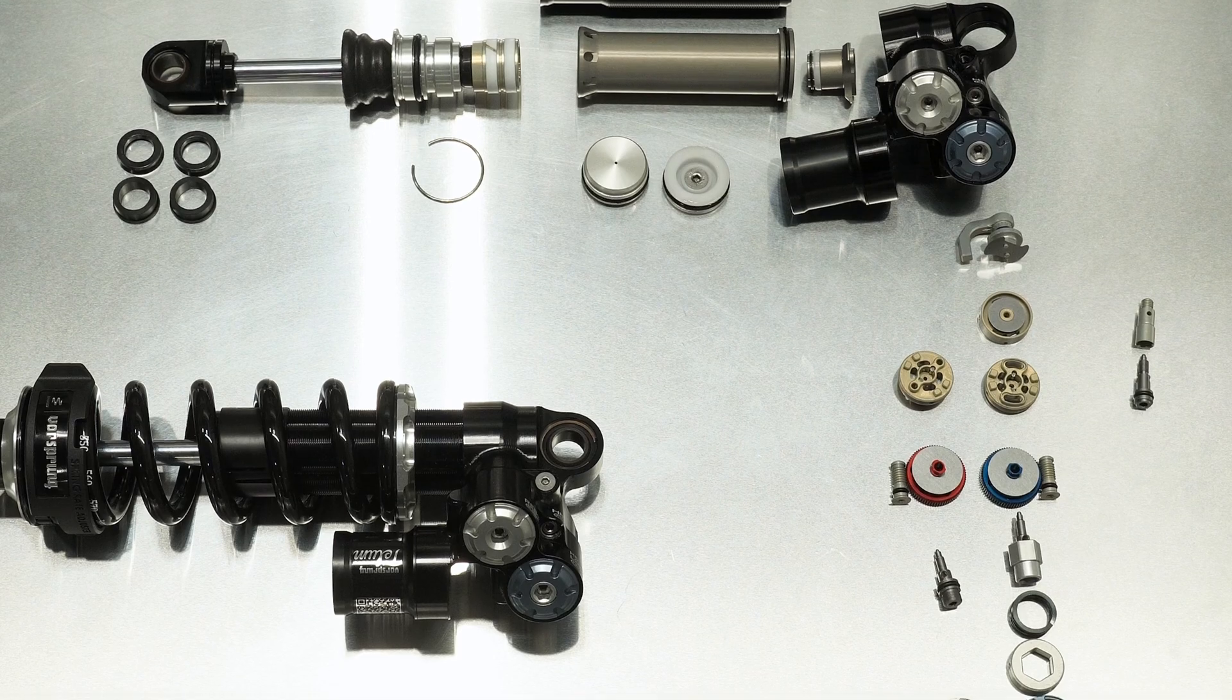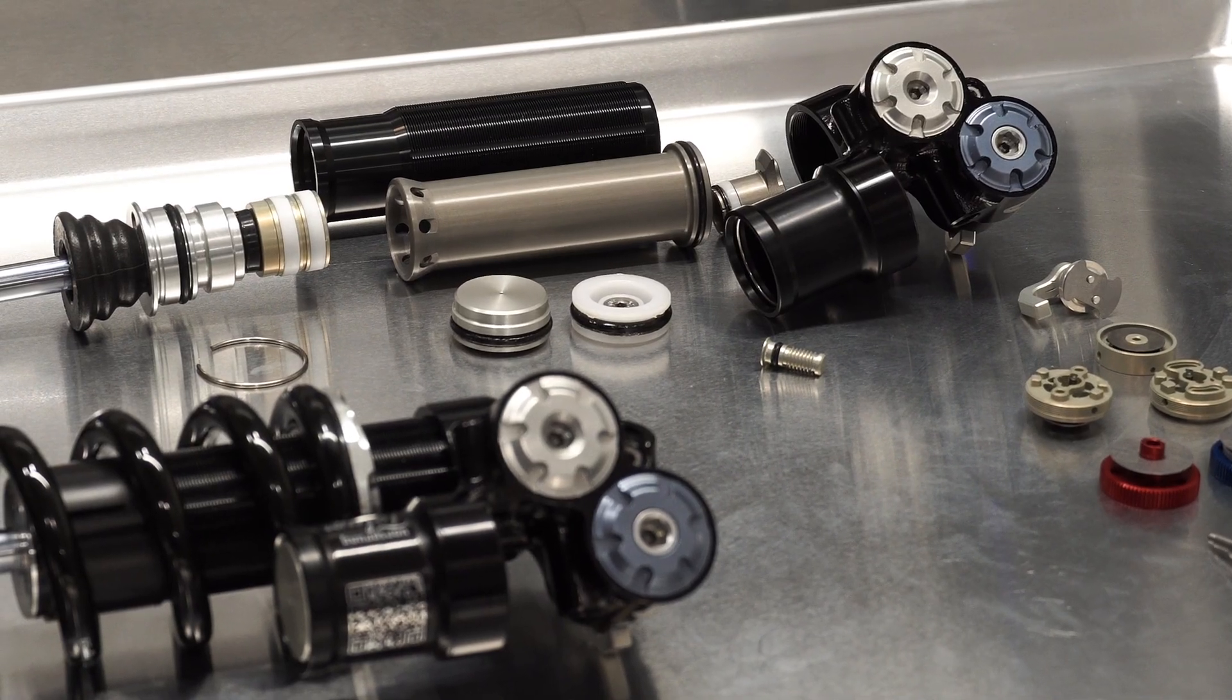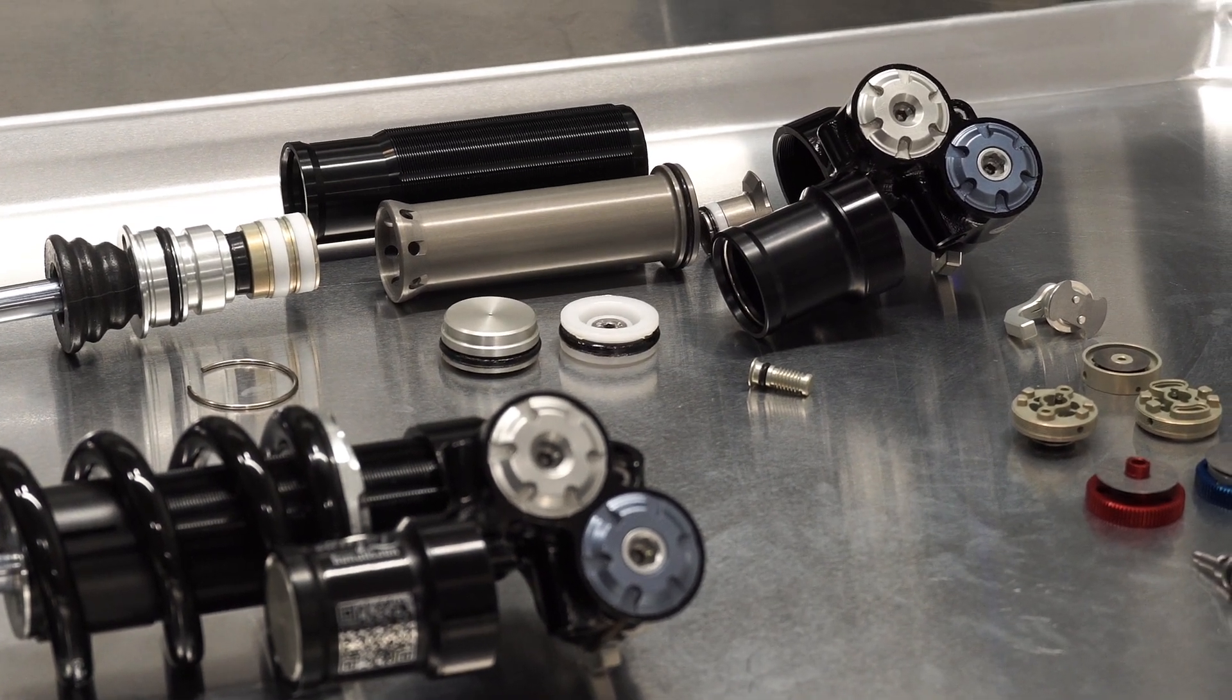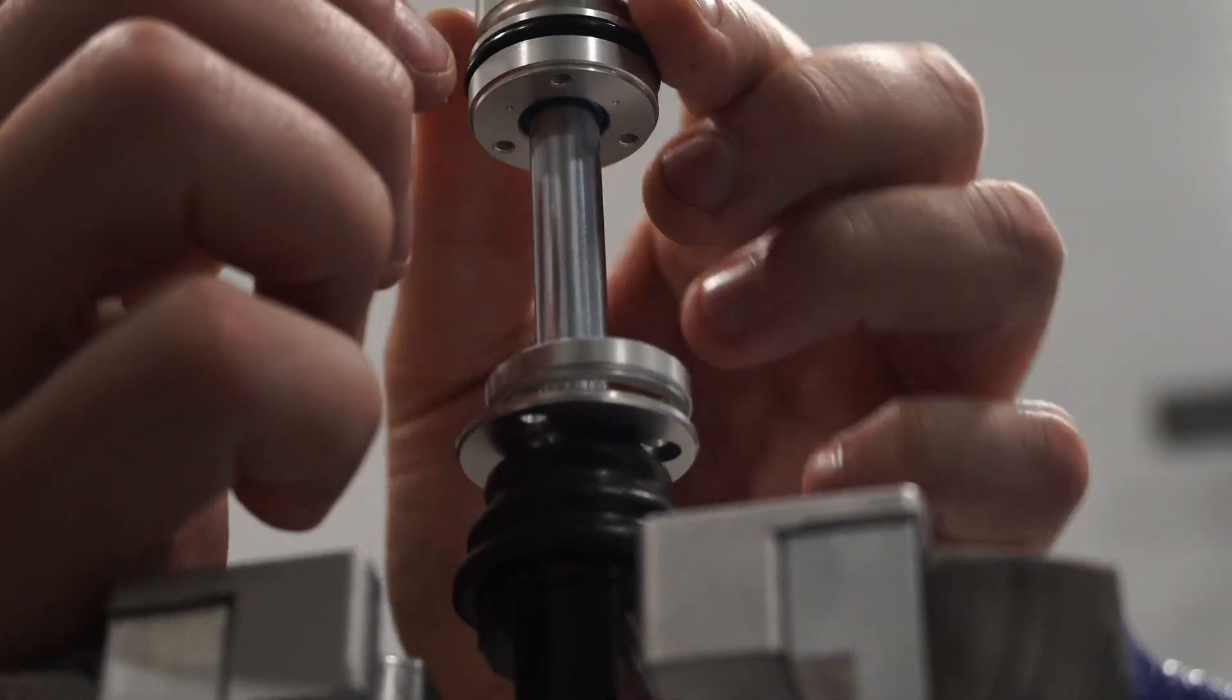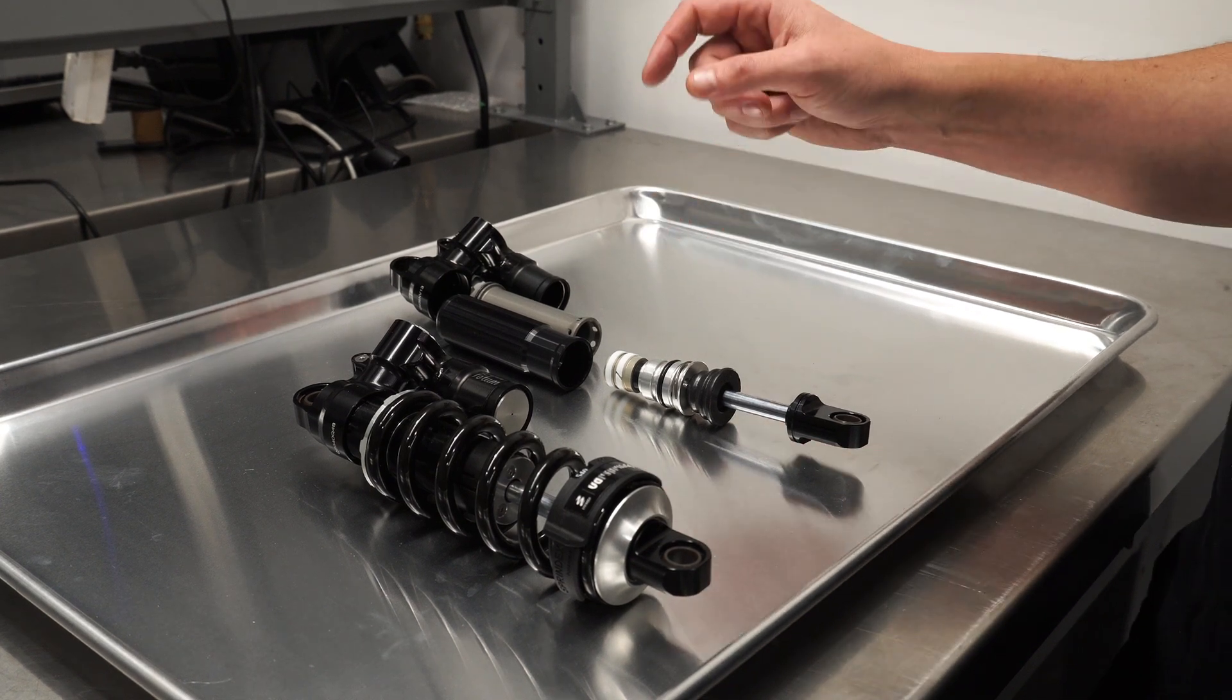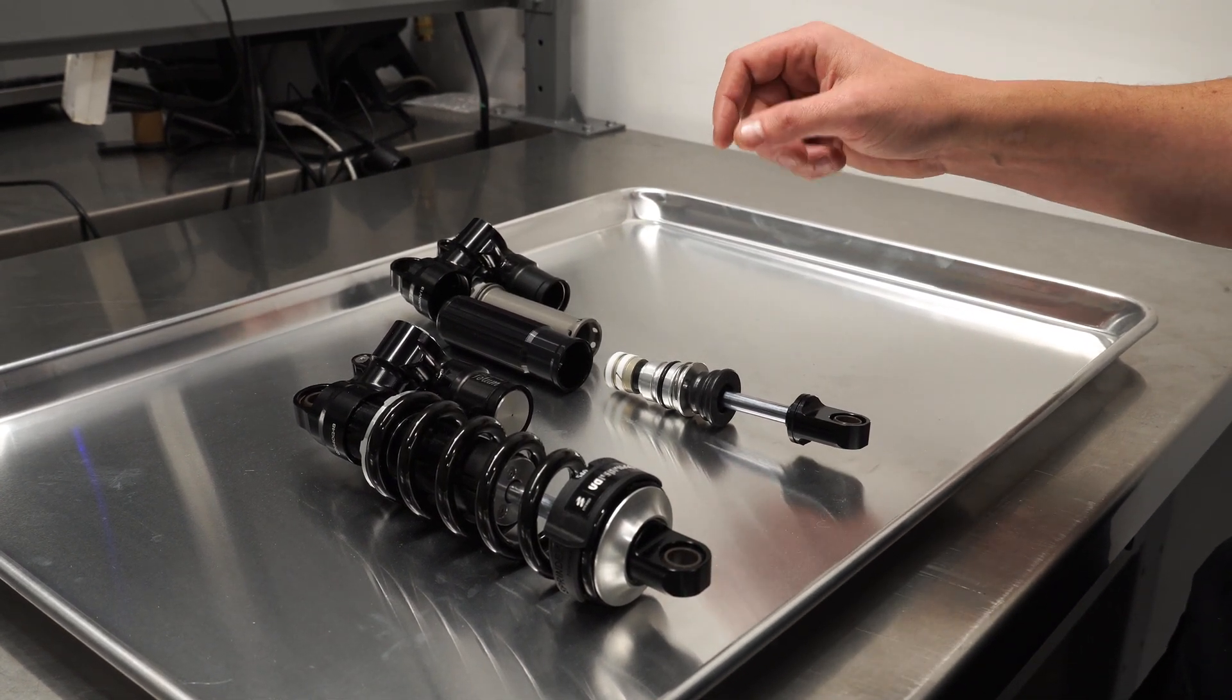We see a lot of marketing touting instantaneous response without properly differentiating between response, meaning the wheel moving out of the way of the bump, or response, meaning the damper generating resistance to movement. The most instantaneous resistive force that exists is stiction, because that can generate force before there's even movement, and we all know how great that makes your suspension feel. Low hysteresis isn't a problem, but despite what a lot of marketing will tell you, it's also not a solution to anything on a mountain bike.